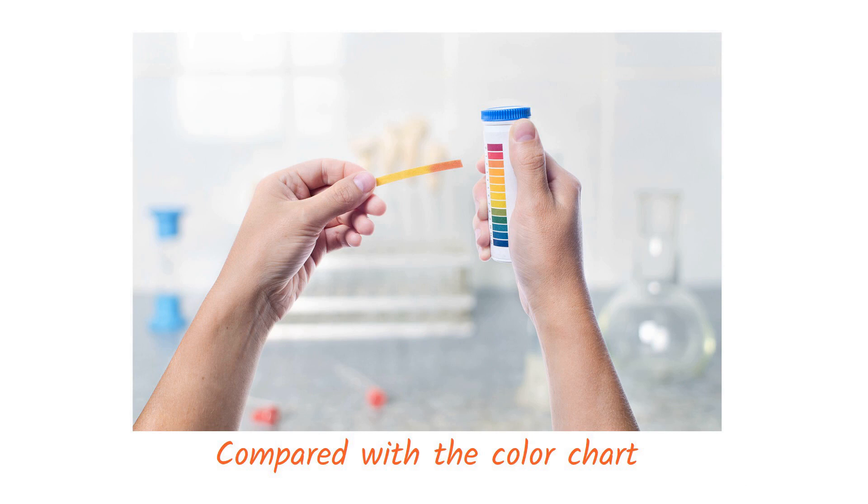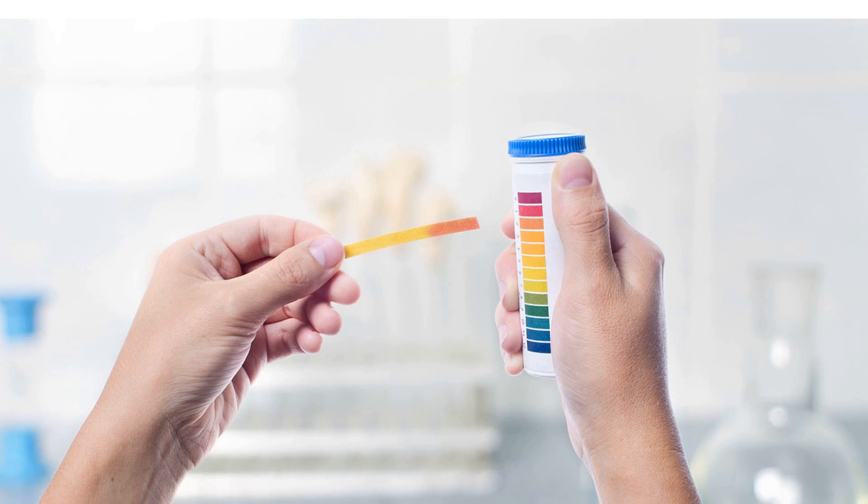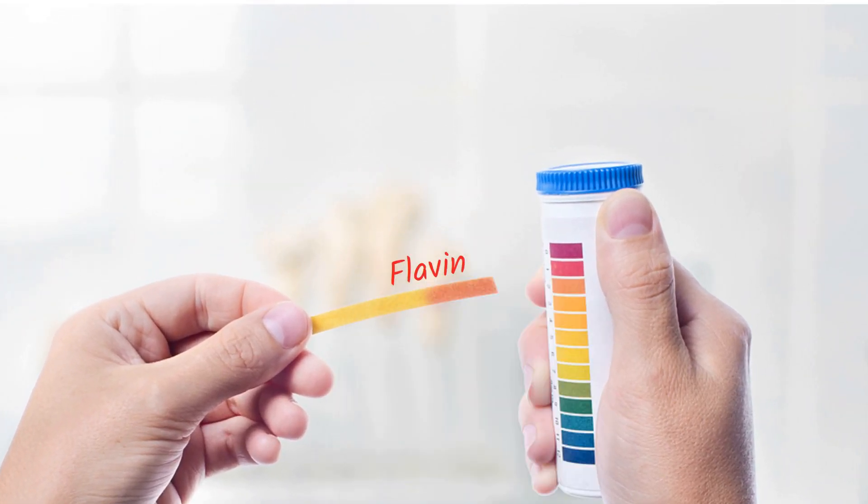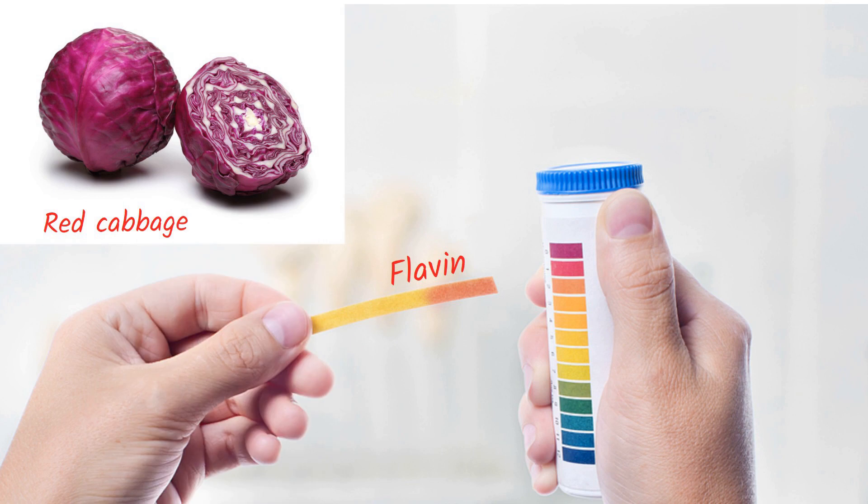What is the reason for these papers to change color? These papers are coated with a pigment called flavin, which is extracted from red cabbage. Flavin has the ability to change color when it comes in contact with an acid or base.